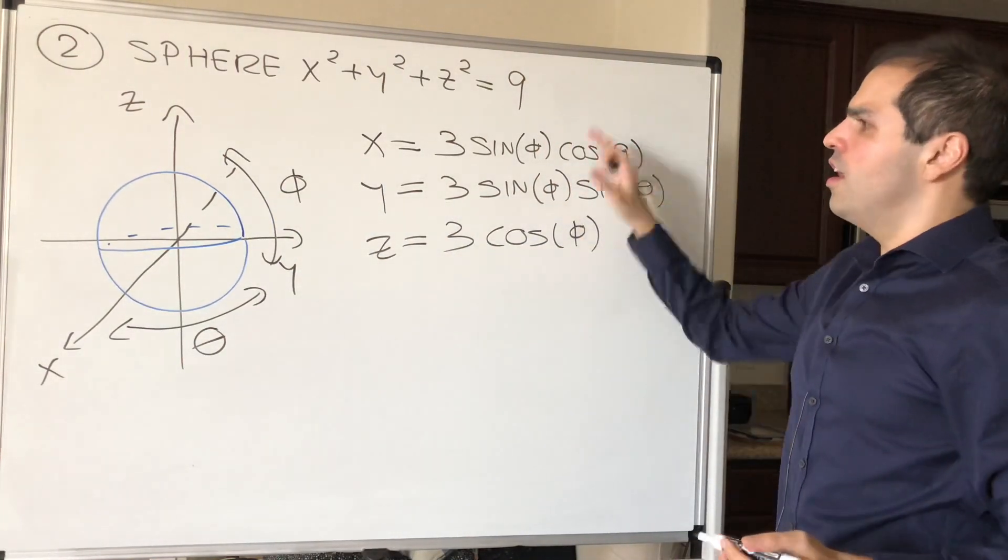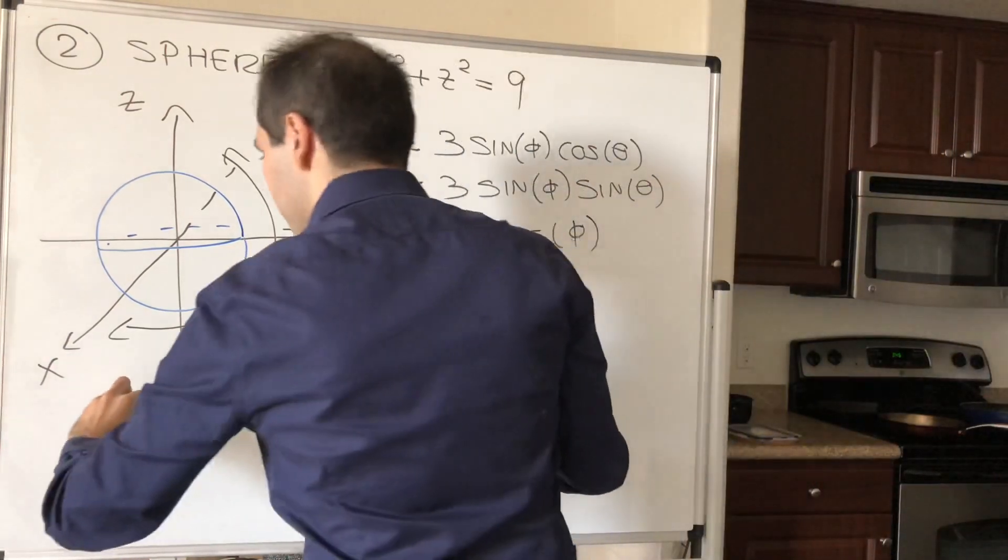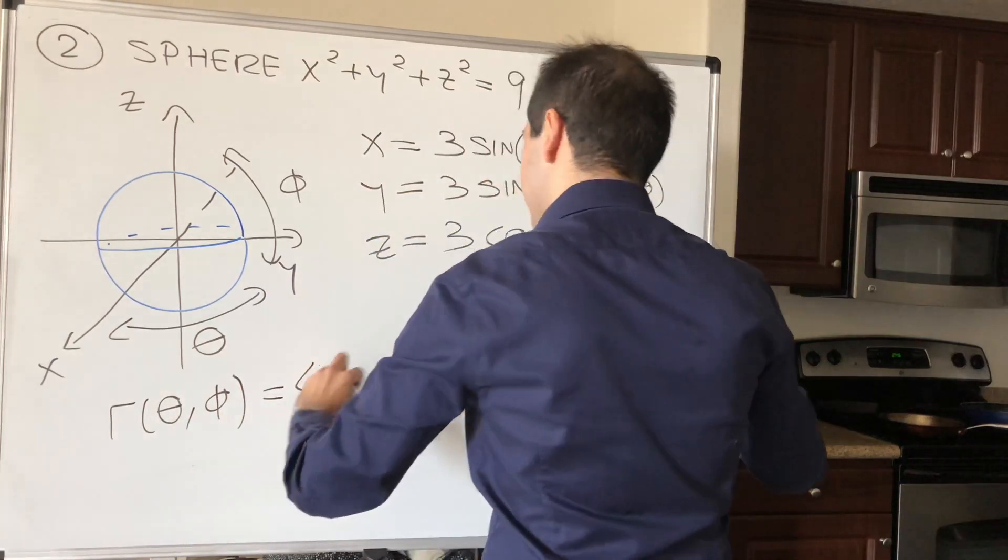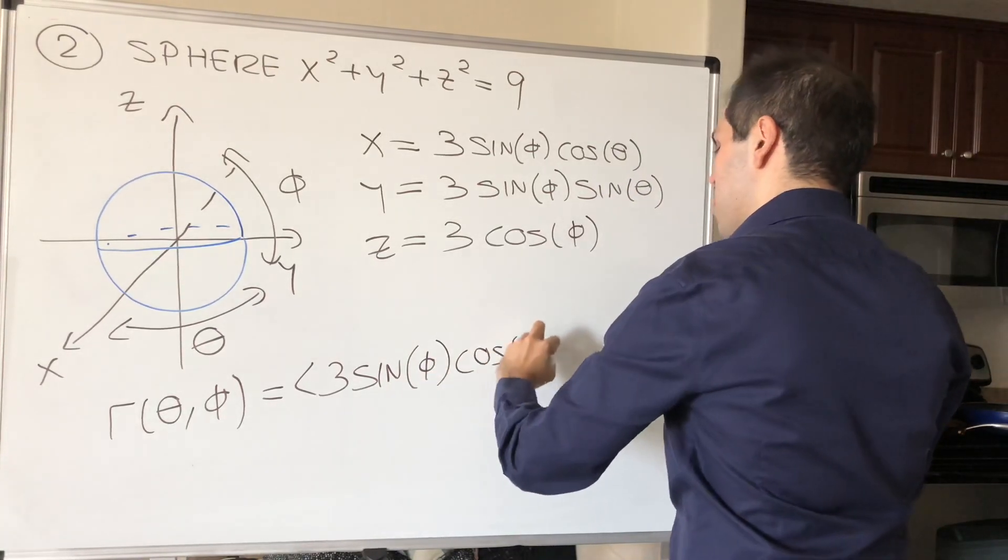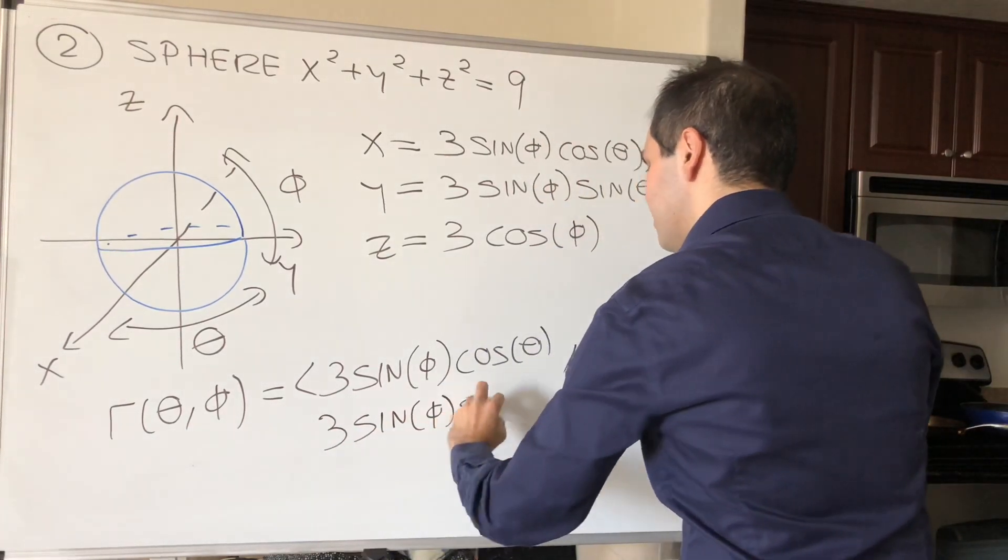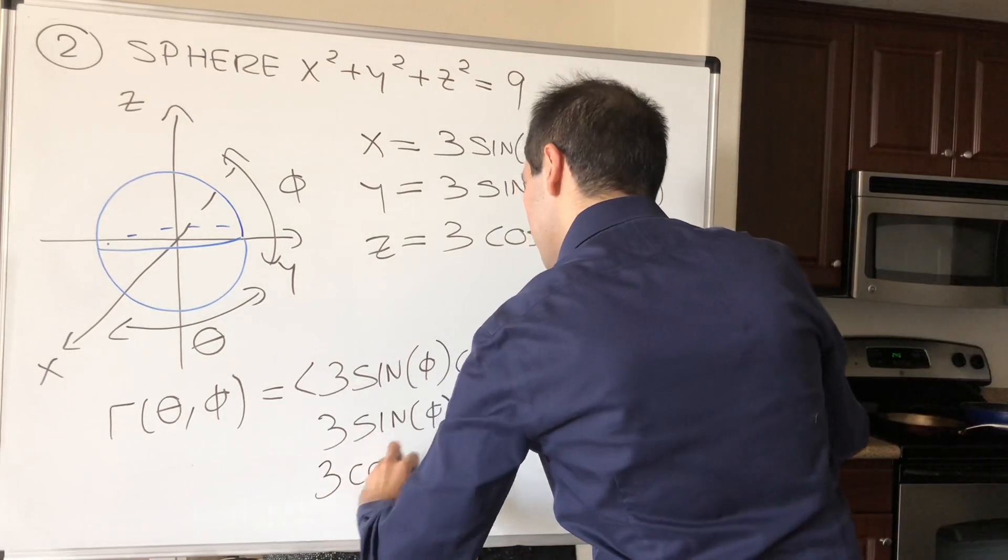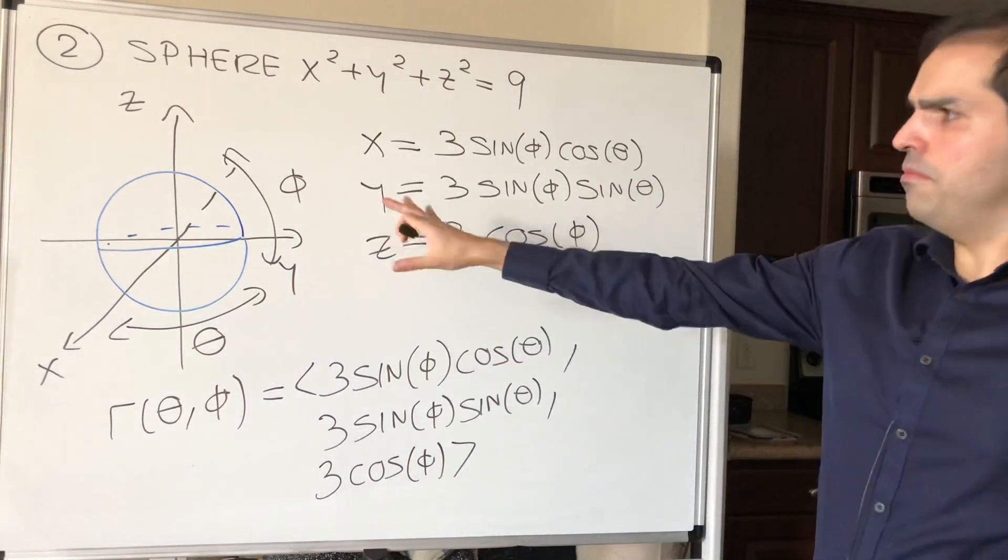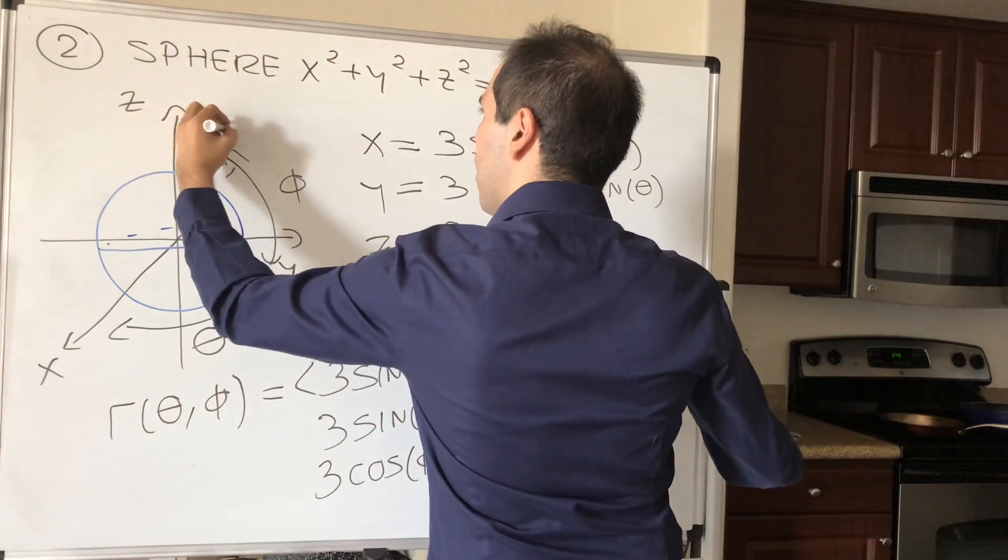And therefore, again, writing this more compactly, we can write this as a vector. r theta phi would just be 3 sine phi cosine theta, comma, 3 sine phi sine of theta, and 3 cosine phi. And again, that just represents a typical point on this sphere, r theta phi.